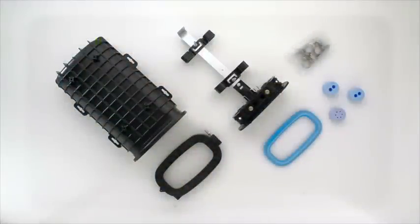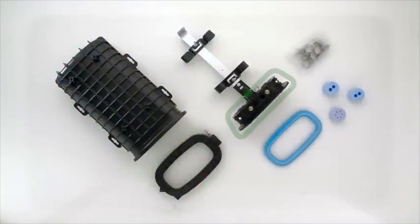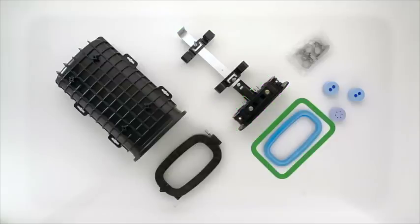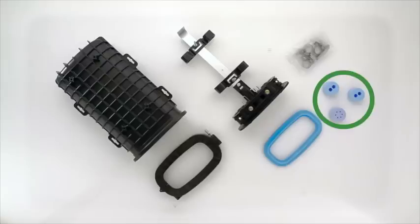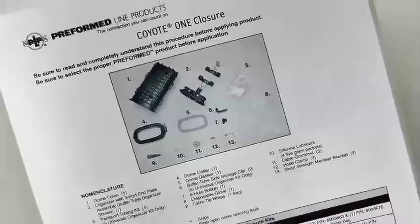The standard Coyote One kit includes dome, collar and plate, organizer assembly, gasket, three grommets, a small parts bag containing cable restraint hardware, and the application procedure.